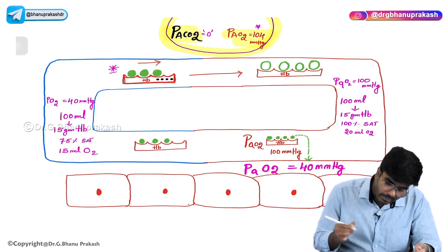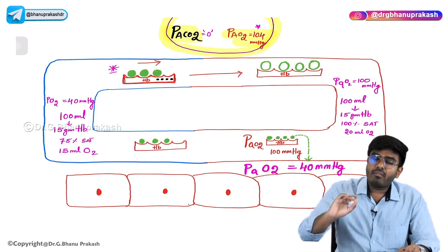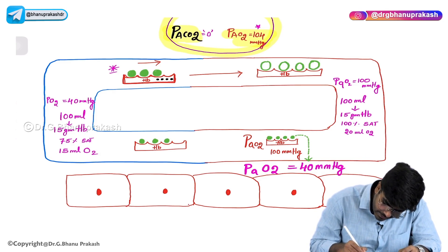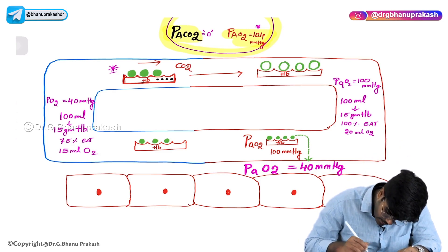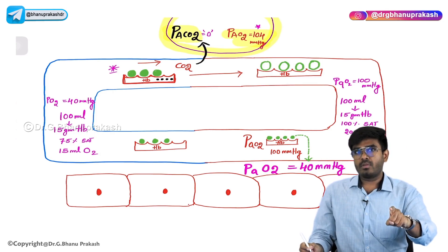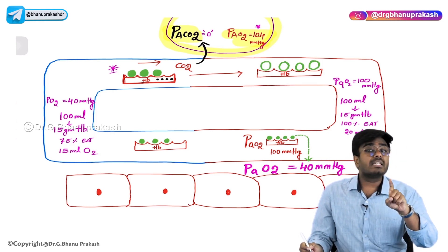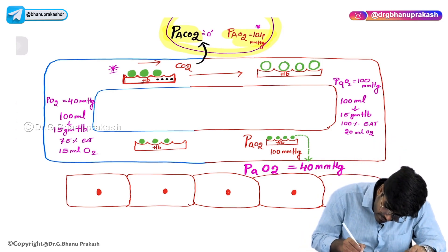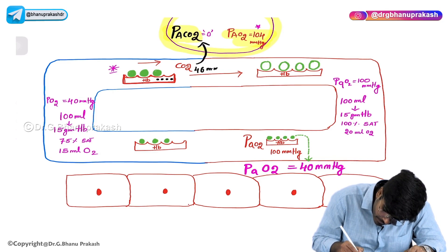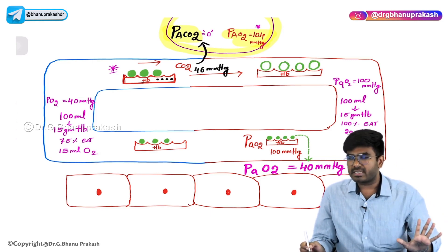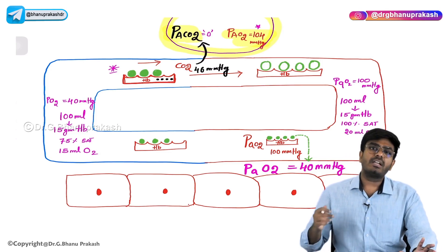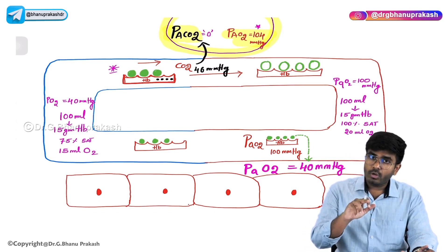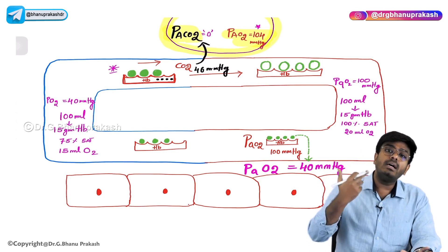This hemoglobin molecule in the blood is now coming to the alveolus. In the venous blood, there is carbon dioxide — no doubt. But the partial pressure of carbon dioxide in the alveolus is zero. So this carbon dioxide immediately diffuses into the alveolus. The partial pressure of carbon dioxide in venous blood is 46 mmHg, and in the alveolus it is zero, so carbon dioxide diffuses from venous blood into the alveolus.